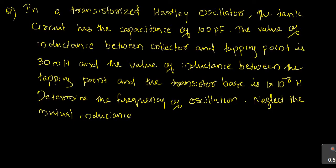First question: in a transistorized Hartley Oscillator, the tank circuit has a capacitance of 100 pF. The value of inductance between the collector and tapping point is 30 mH, and the value of inductance between the tapping point and the transistor base is 1×10⁻⁸ henry. Determine the frequency of oscillation; neglect the mutual inductance.